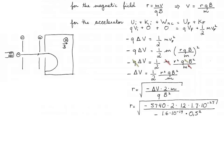Remember, what's under the square root really is a positive number because the charge of our ions is negative, so there is no problem. Let's plug in the numbers for carbon-12: the square root of negative 5740 volts times 2 times the mass of carbon-12, which is 12 times the atomic mass unit (12 × 1.7 × 10⁻²⁷ kg), divided by negative 1.6 × 10⁻¹⁹ C times half a Tesla squared. We get that the radius for carbon-12 is 7.65 centimeters.